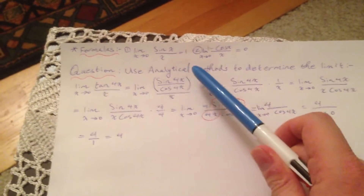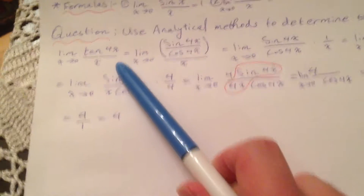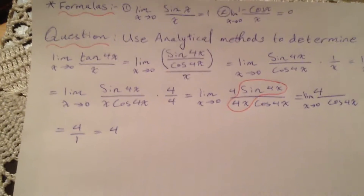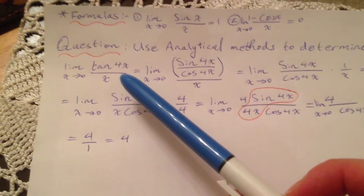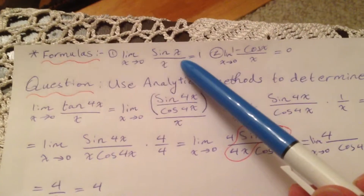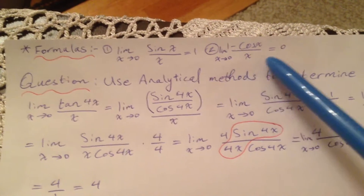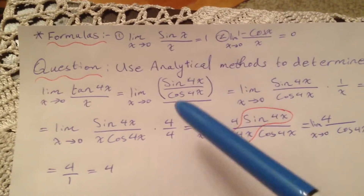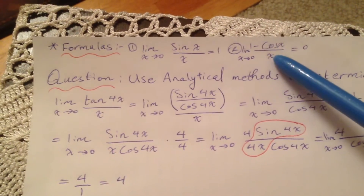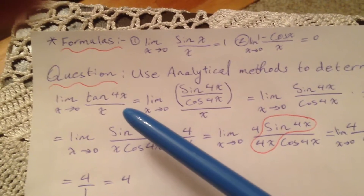We have this question which says: use analytical methods to determine the limit as x approaches 0 of tan(4x) over x. When we have trig and limits, we should think of two formulas: either limit x approaching 0 of sine x over x equals 1, or 1 minus cosine x over x equals 0. We should simplify the term to a point where we can apply either one.